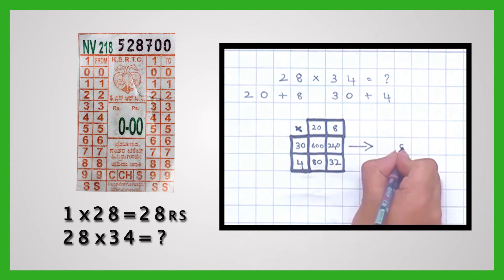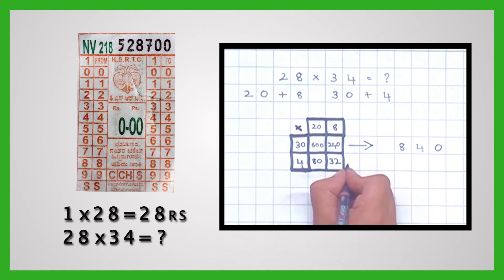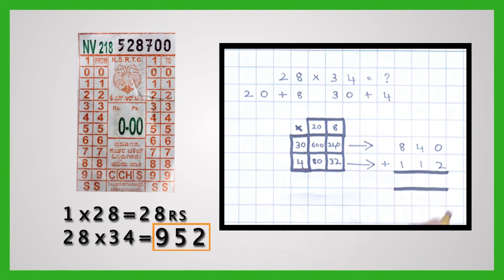600 plus 240 is 840. And 80 plus 32 is 112. The total is 952.